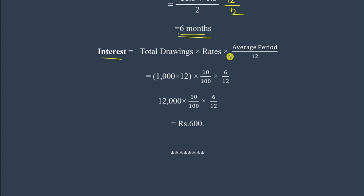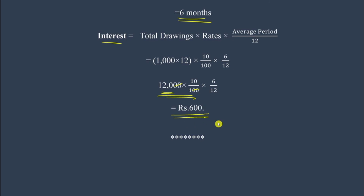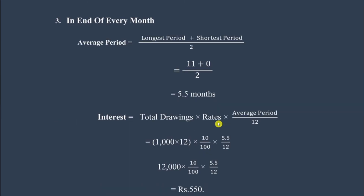Applying the interest formula: Interest = Total Drawings × Rate × Average Period / 12. Total drawings = 12,000 and rate = 10% remain the same. Only the average period changes to 6. So: 12,000 × 10/100 × 6 / 12. Cancelling zeros: 120 × 10 × 6 / 12 = 600 rupees. The interest for drawings at the middle of every month is 600 rupees.